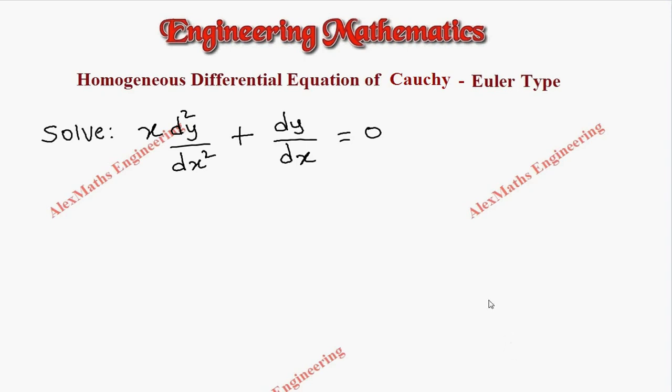Hi students, this is Alex. In this video we are going to solve a problem based on homogeneous differential equation of Euler type or Cauchy-Euler type. The question is x into d square y by dx square plus dy by dx equal to 0.